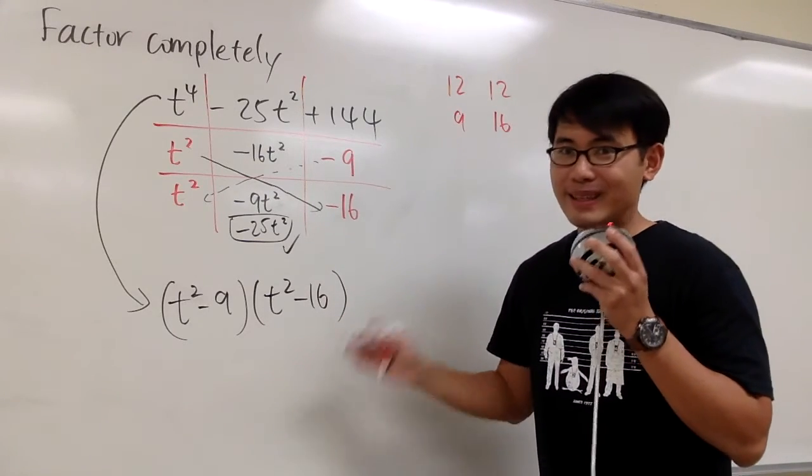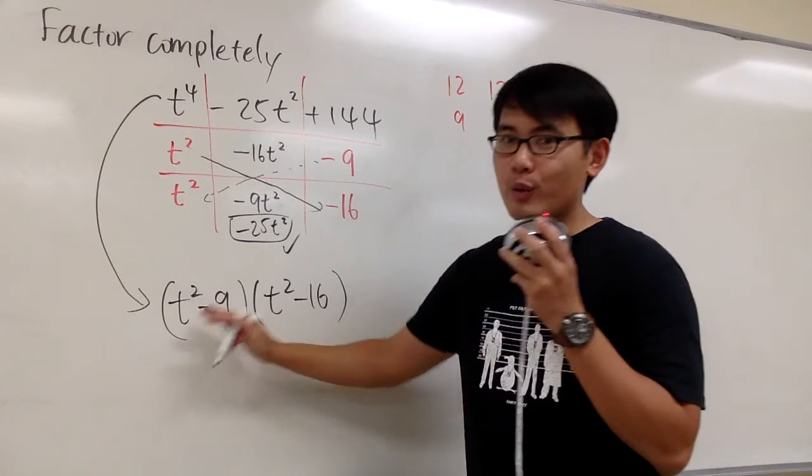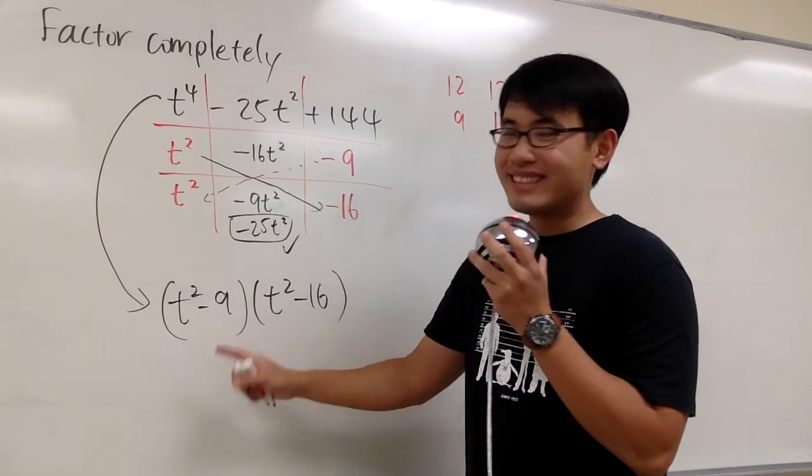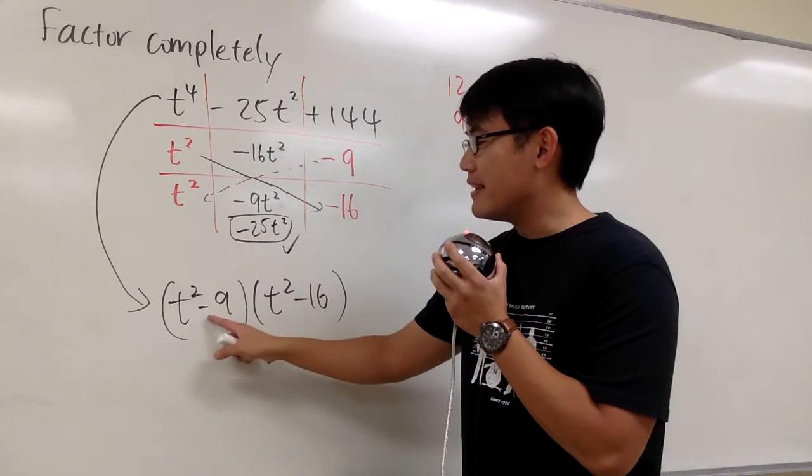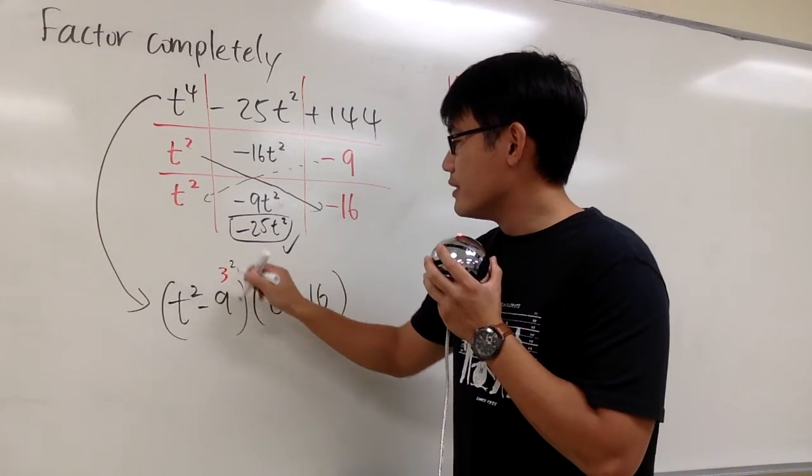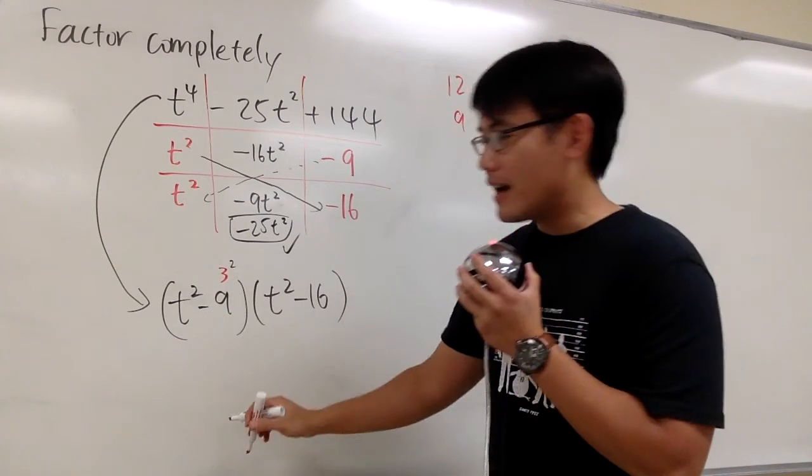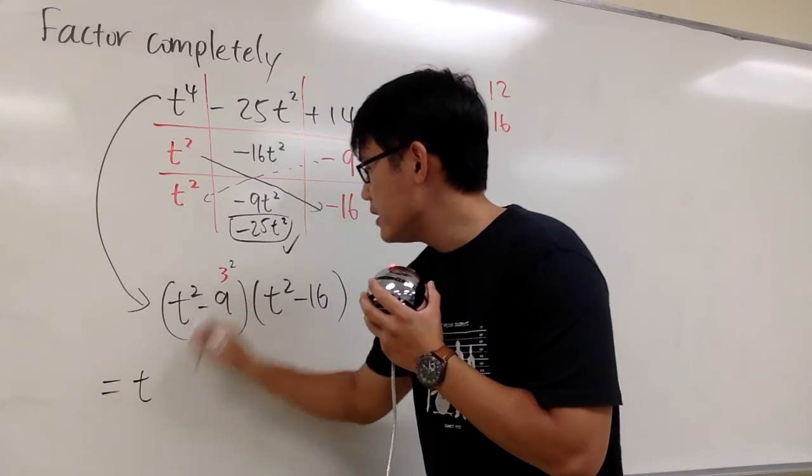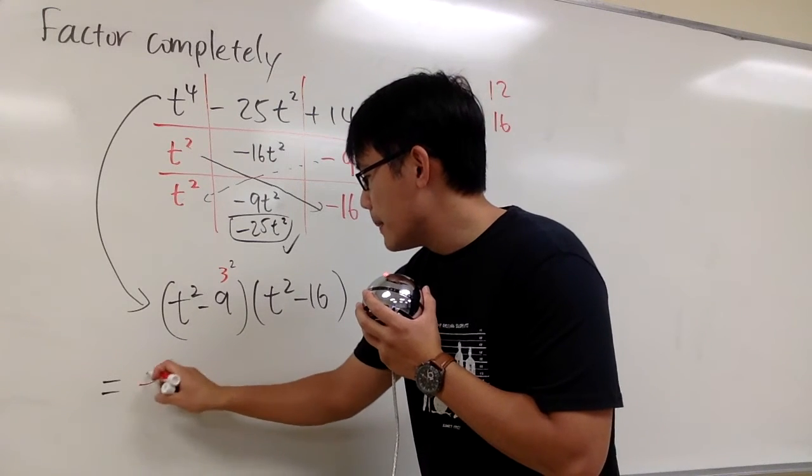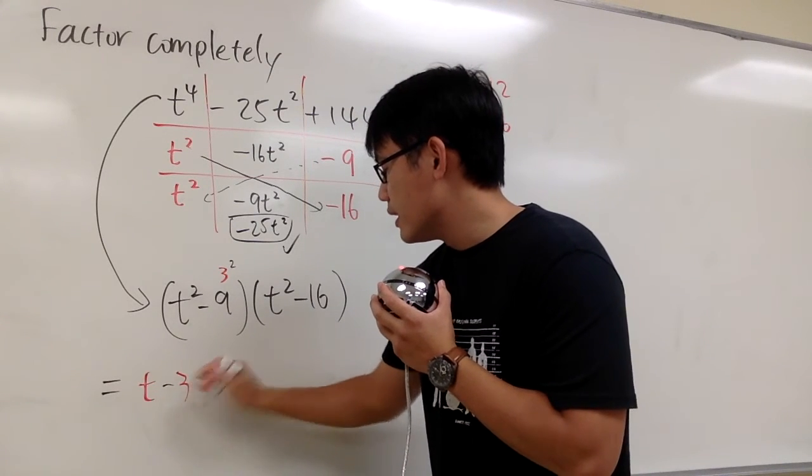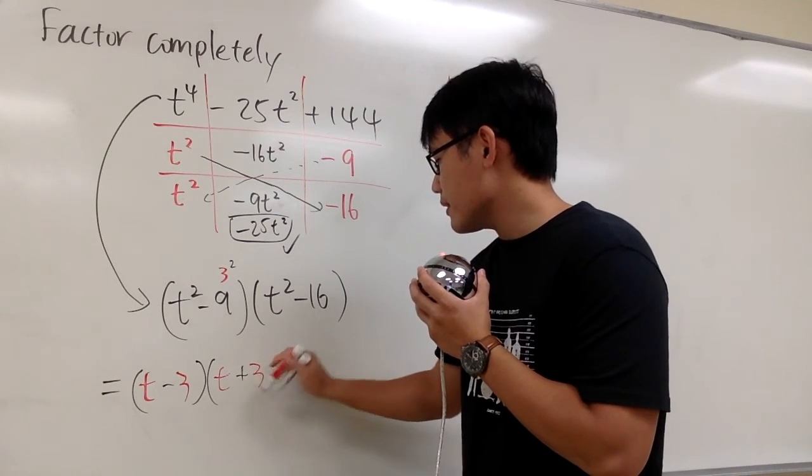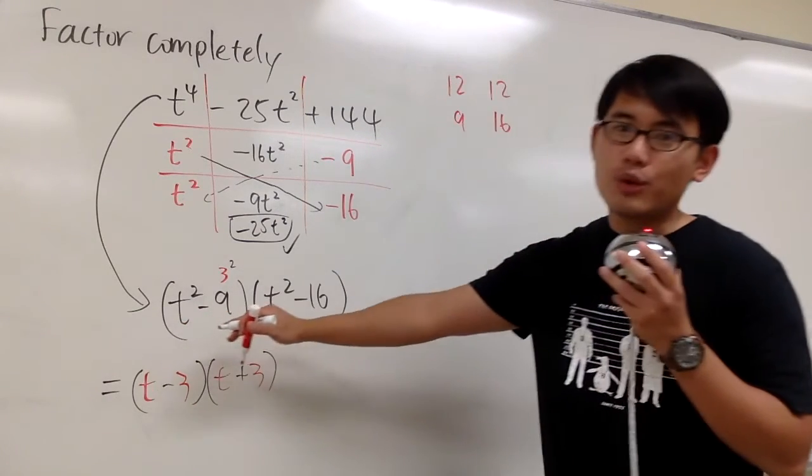But then are we done? No, because this right here, once again, we can factor it. This is going to be a difference of two squares. This is t squared minus 3 squared, right? The 9 is the same as 3 squared. So for the first one, we can factor this out as t minus 3. And let me change color for you guys. t minus 3 times t plus 3. This right here is for t squared minus 9.